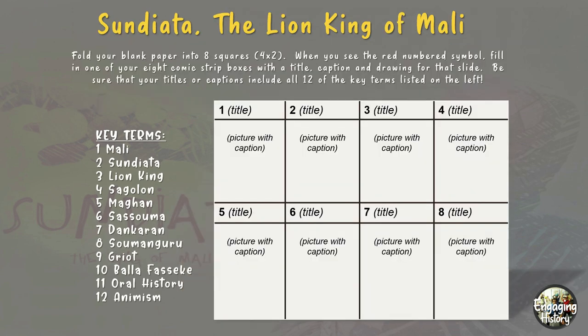Back to the comic strip — oftentimes, especially for the first slide, I like to model for my students how to fill out the box. In this case, I drew a little doodle of Pride Rock adapted to the Sundiata story. For my box, I put the title 'King Moghan the Hunter, a Prophecy, Wife, and Child.' The caption reads: 'King Moghan and Queen Sagalan give birth to Sundiata.'